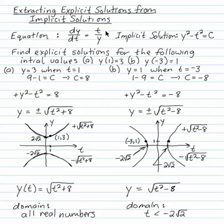So in the previous video we looked at dy/dt equals t over y, and we found there's an implicit solution y squared minus t squared equals c.